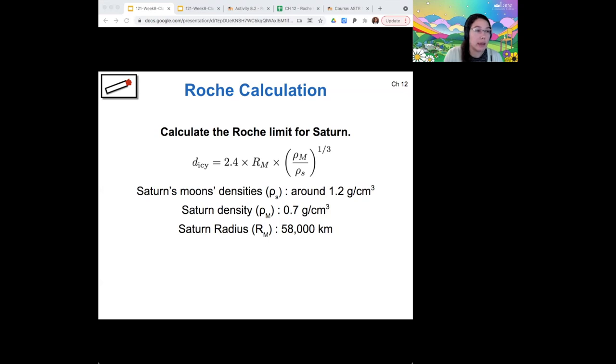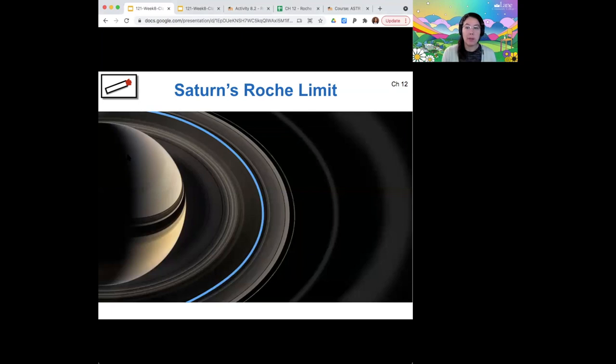And we can actually check our work here. So let's go ahead and do that by thinking about where that is in relation to Saturn's rings. And it turns out that this is actually midway through Saturn's rings. So it's right around the area of the Cassini division, in fact.